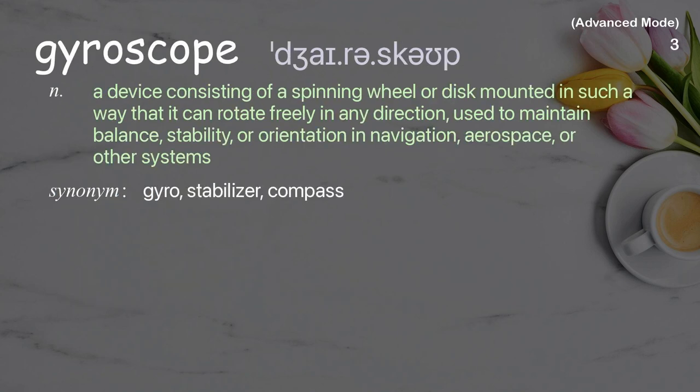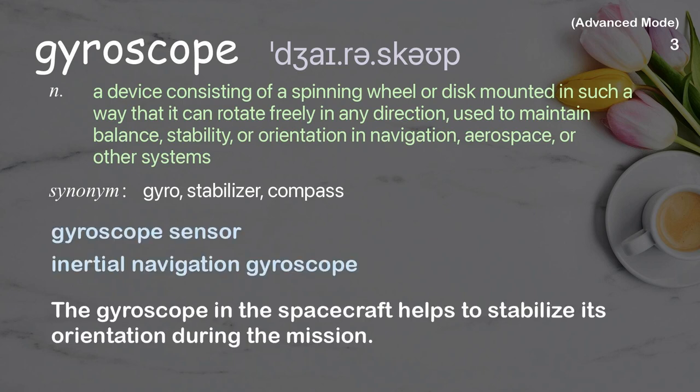Gyroscope: A device consisting of a spinning wheel or disc mounted in such a way that it can rotate freely in any direction, used to maintain balance, stability, or orientation in navigation, aerospace, or other systems. Examples: gyroscope sensor, inertial navigation gyroscope. The gyroscope in the spacecraft helps to stabilize its orientation during the mission.